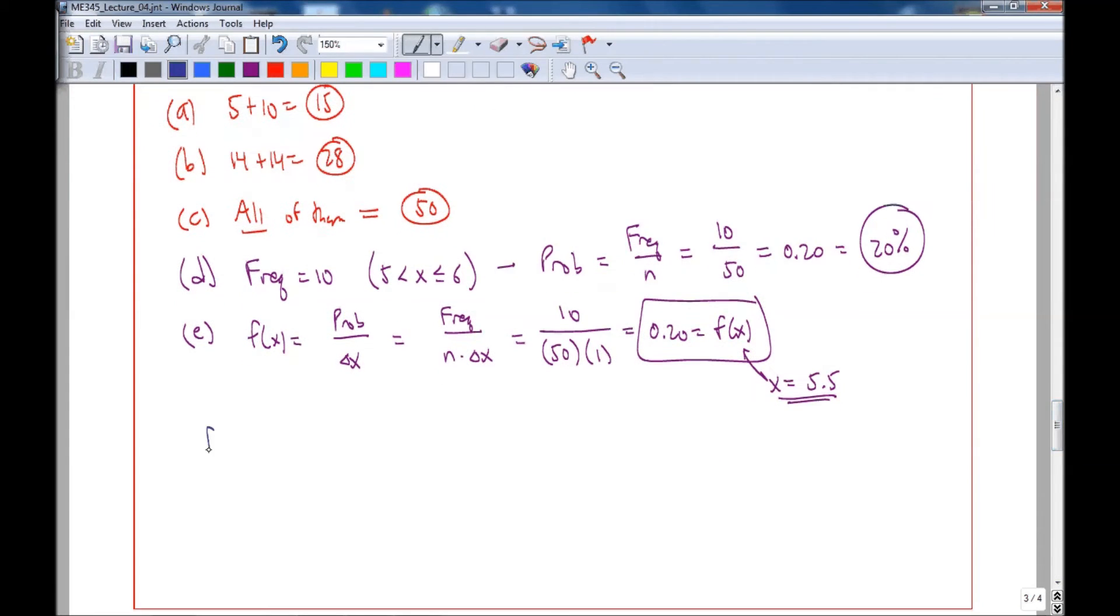So to do this, at x equal 8.5, f(x) is frequency over n times delta x. In this case, 6 data points over 50. Delta x is 1, so we get 0.120 as our f(x) at x equal 8.5, halfway in the bin.